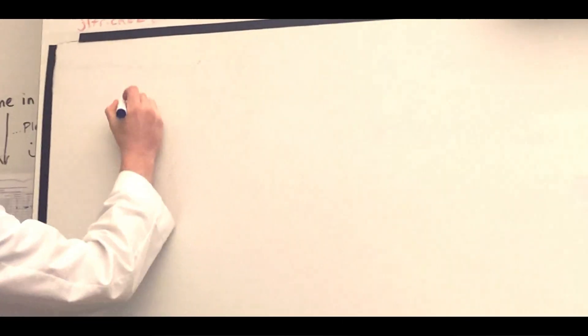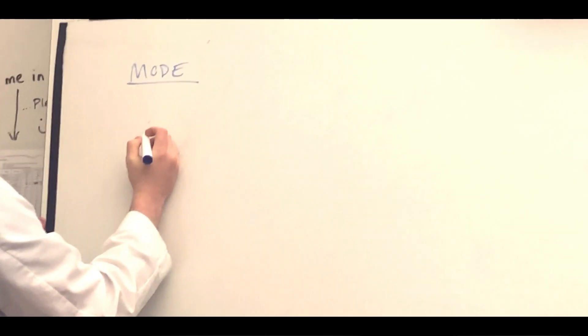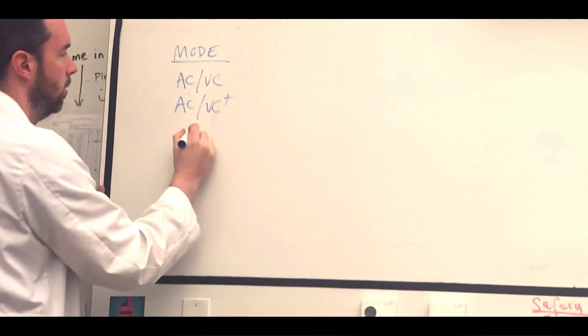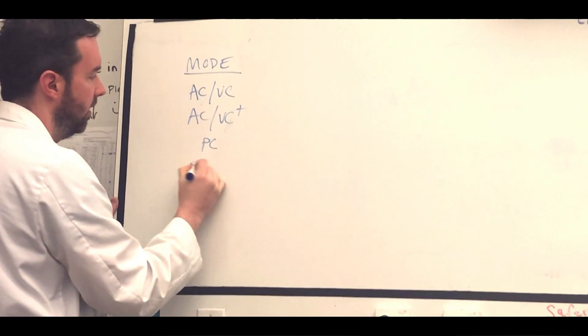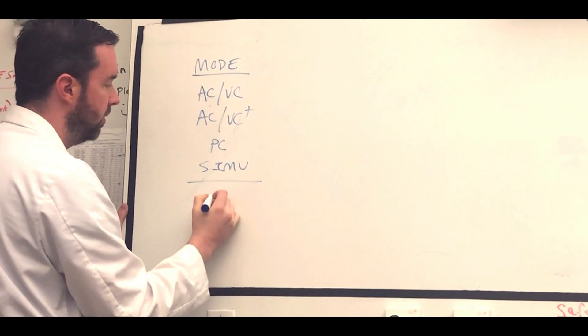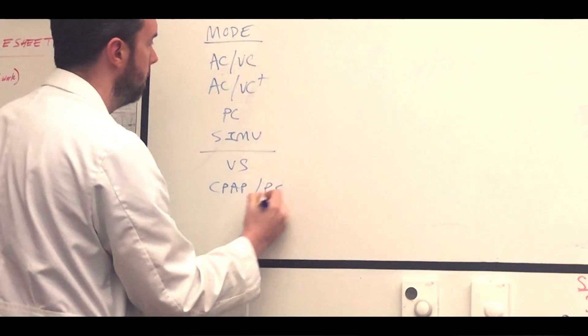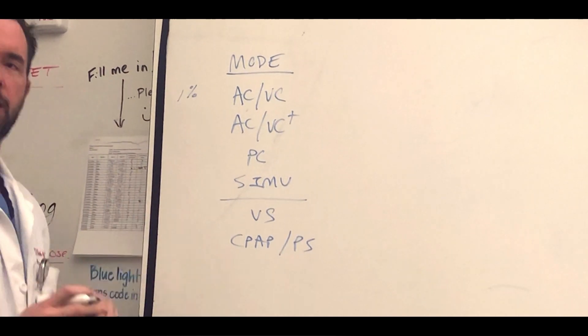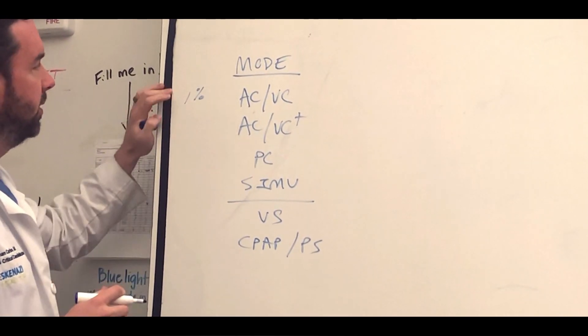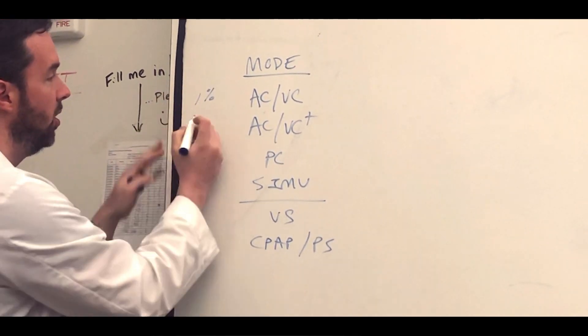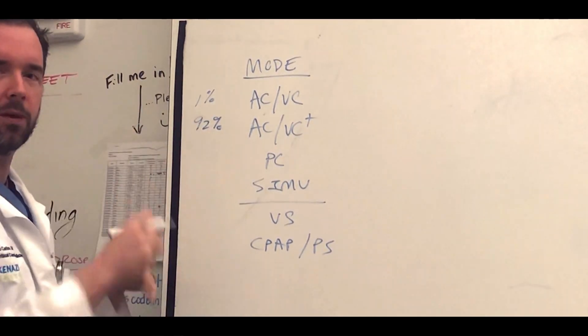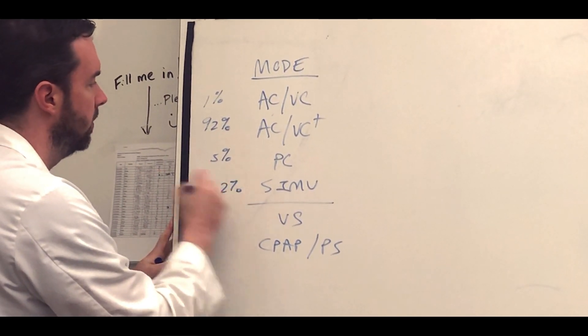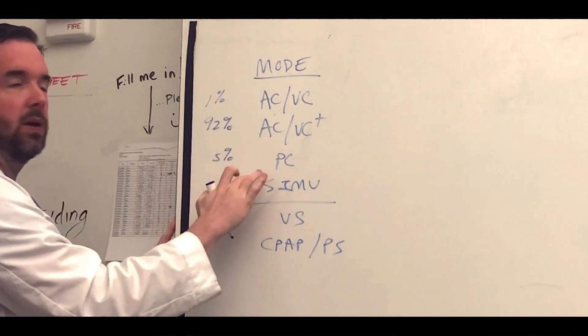We're going to go to ACVC, ACVC plus pressure control or ACPC, SIMV we'll touch on briefly, then volume support, and CPAP pressure support. To give context, we use ACVC about one percent of the time. We use ACVC plus like 92% of the time. We use pressure control maybe about five percent of the time, and SIMV one to two percent of the time.